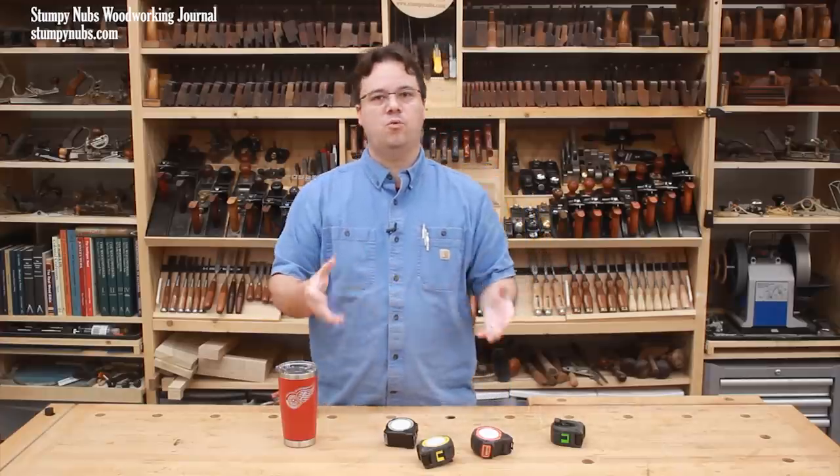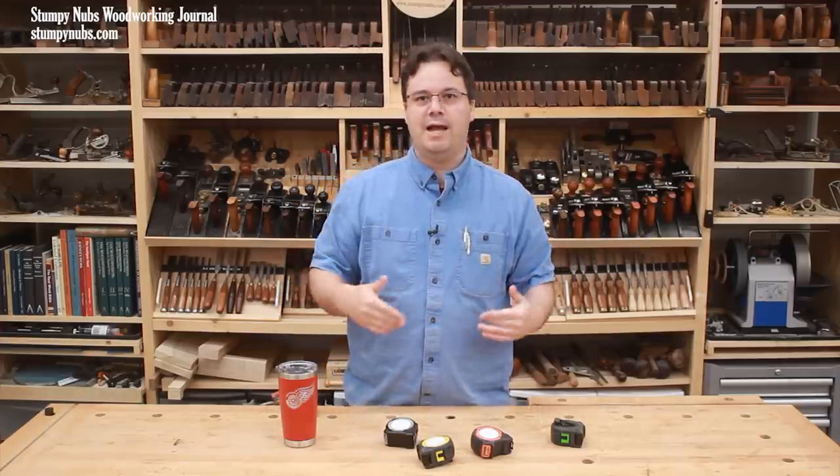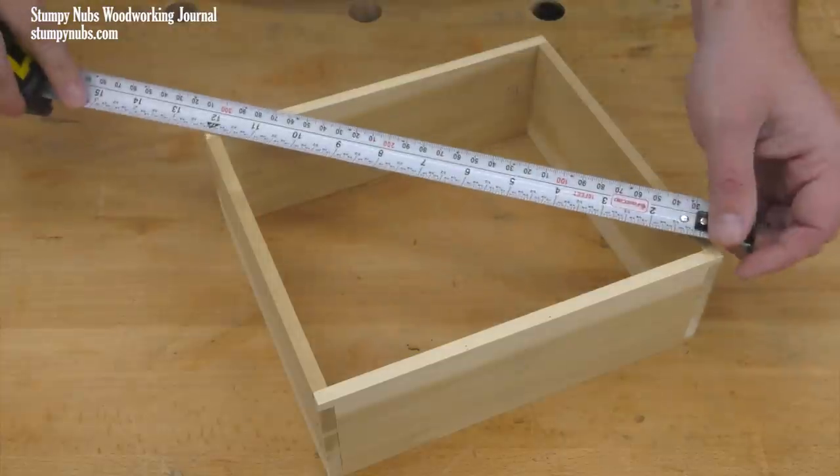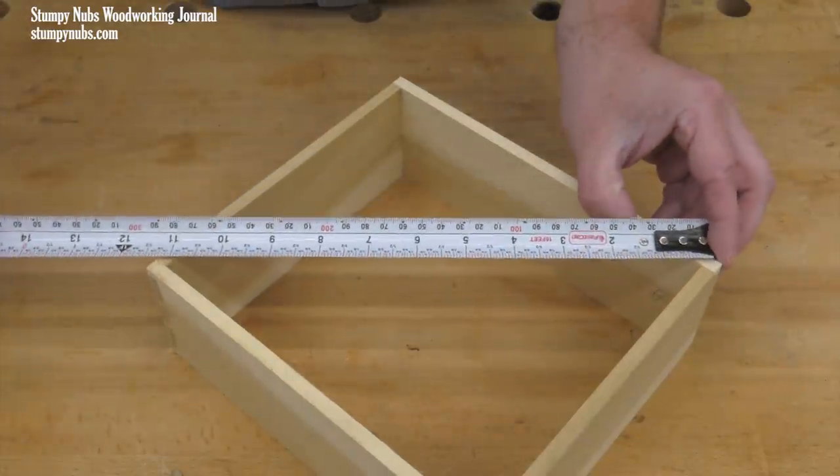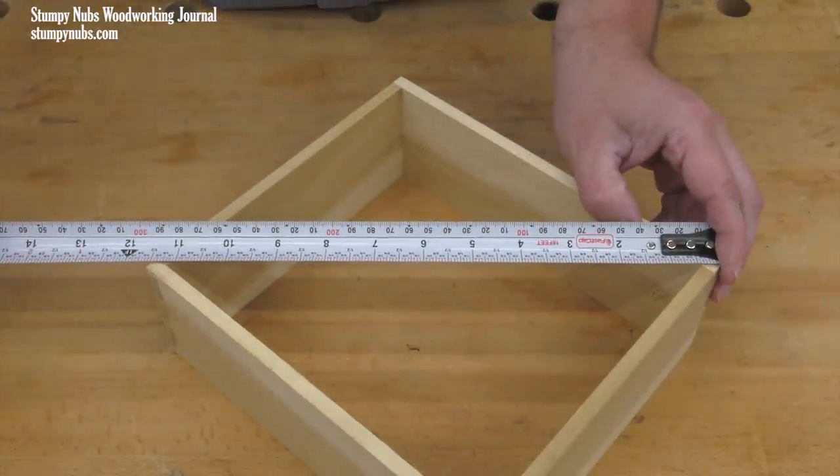A measuring tape may also be used as a square. If you have a four-sided object, such as a box or a frame, you can measure from corner to corner in one direction and see if that matches the distance between corners in the other direction. If it does, it's square.